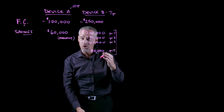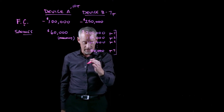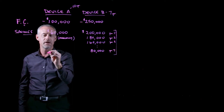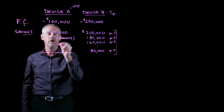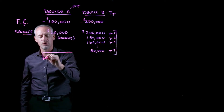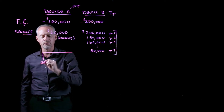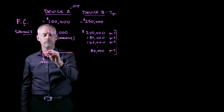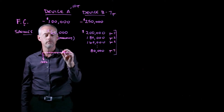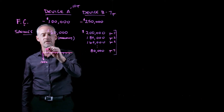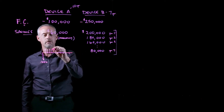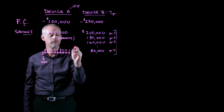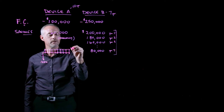I'd like to visualize these problems with cash flow diagrams. For device A, it's relatively simple: we have the initial $100,000 at time zero, and then over the ten years we have savings of $60,000 per year. That $60,000 per year is our annuity.